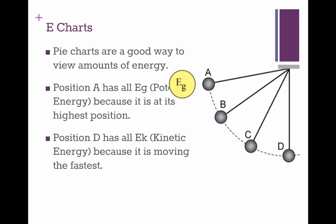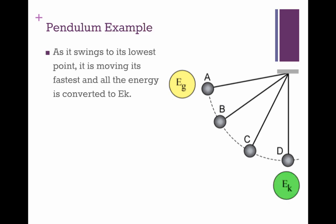So the pie chart for A would look like this, Eg, and the pie chart for D would look like this, Ek. And yes, the circles are supposed to be the same.